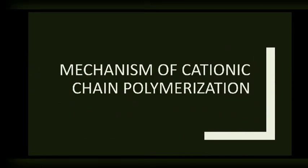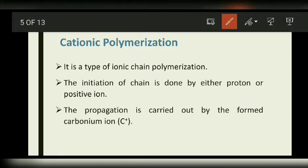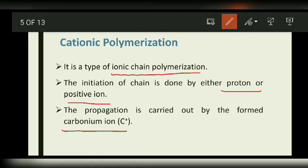In this session, let us study the mechanism of cationic chain polymerization in detail. It is a type of ionic chain polymerization where the initiation of the chain is done by either a proton or a positive ion, and the propagation is carried out by the formed carbonium ion.